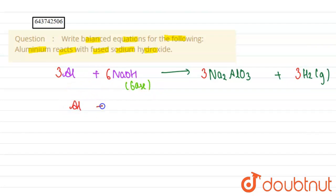So this is the given reaction. We can also take 3 common, so this is simply written as Al + 2NaOH gives us Na₂AlO₃ plus hydrogen gas. These are the two reactions we can write; any of them, both of them are balanced.